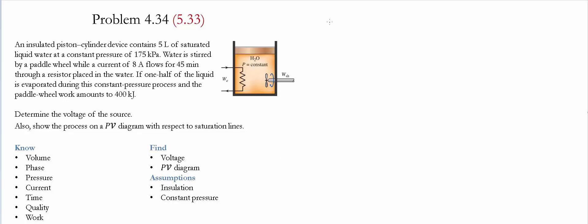The first step is to write an energy balance. We have energy in minus energy out equals the change of energy in the system. The energy in comes from the resistor and the paddle wheel, and the energy leaving is the boundary work out. Since the piston is insulated there is no heat transfer, and there is no change in velocity or position, so the change in potential and kinetic energy are zero. Therefore the only change in the system is the change in internal energy, since this is a closed system.